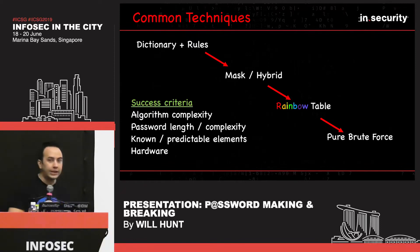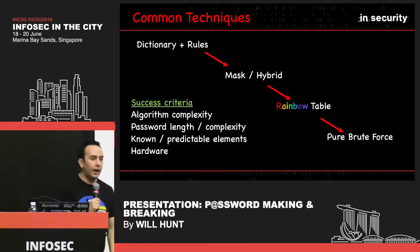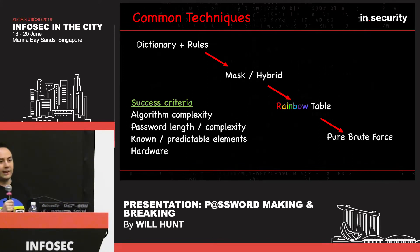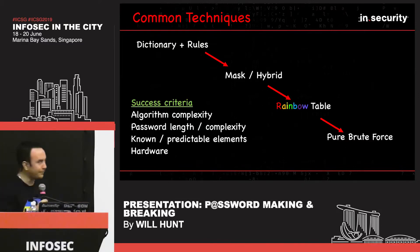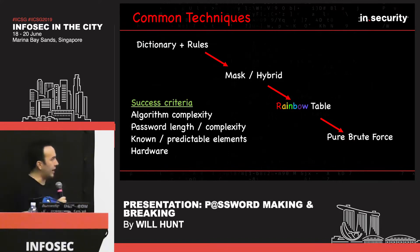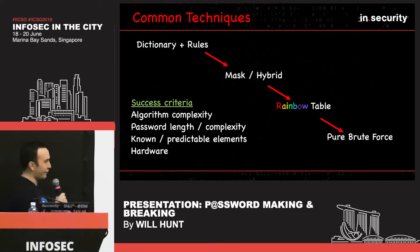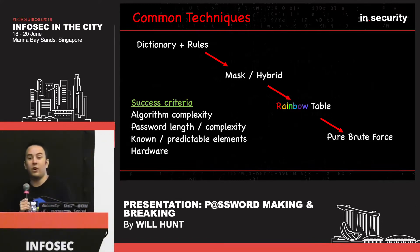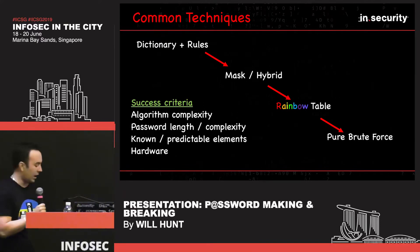Common techniques: traditionally, the go-to is rules and dictionaries. Many of you may have heard of a common rule set like rockyou.txt — there are 101 million rules out there. You take your password candidate from your dictionary, hash it, compare it to the stolen hash, optionally add rules, and if the hash matches, success. We'll also touch on mask and hybrid attacks, rainbow tables — which are becoming less useful over time — and pure brute force exhausting an entire key space, though these last two are rarely used these days.